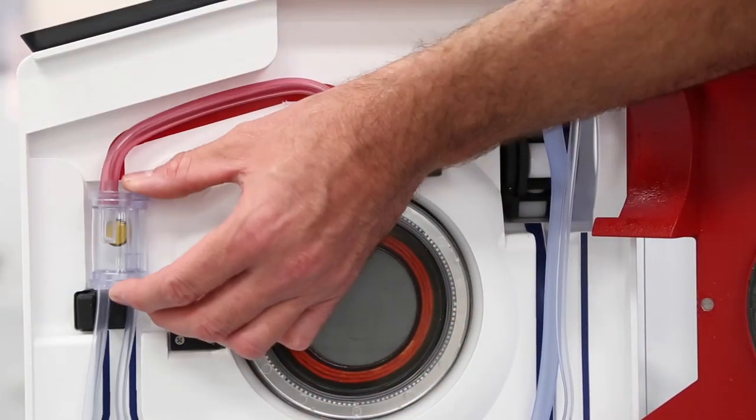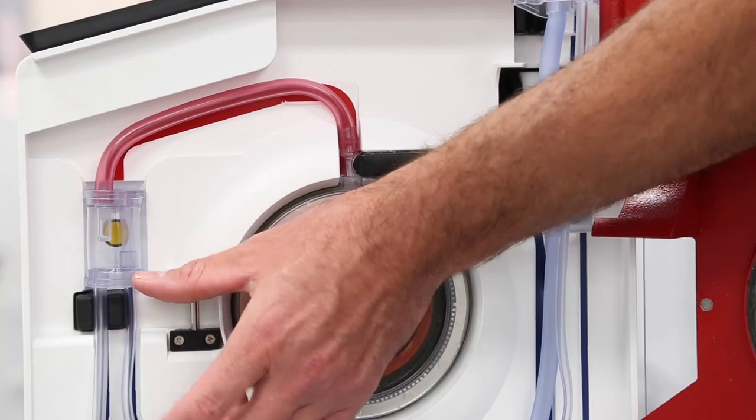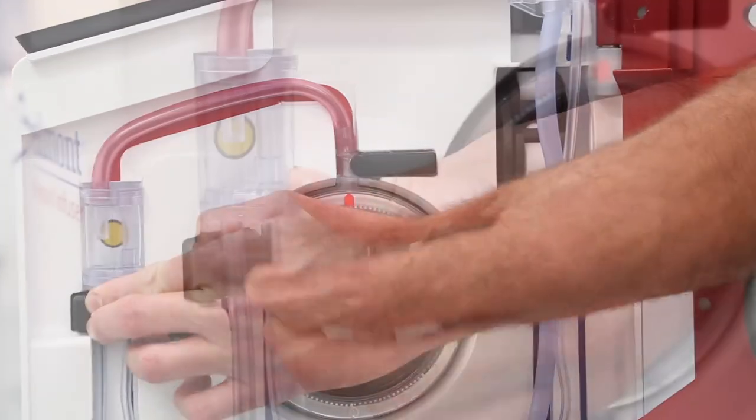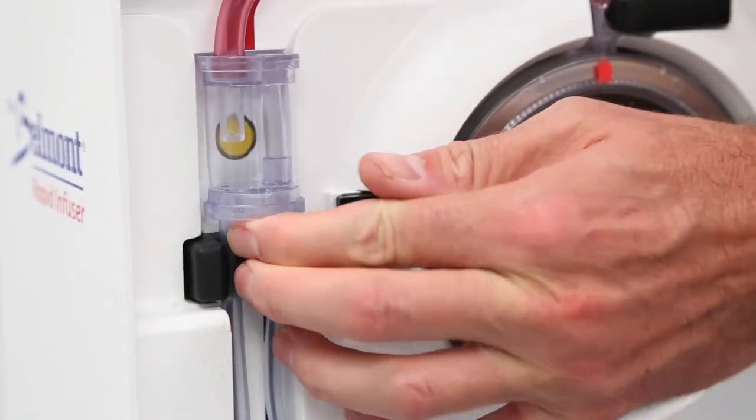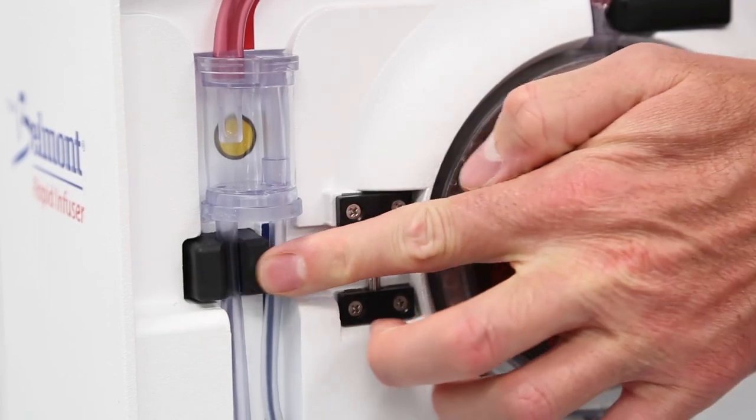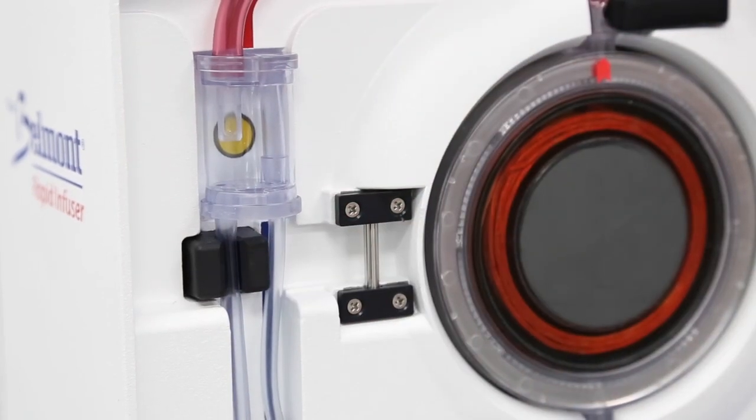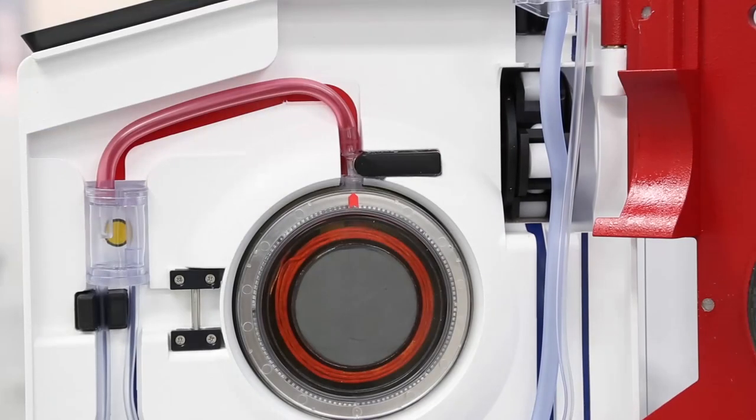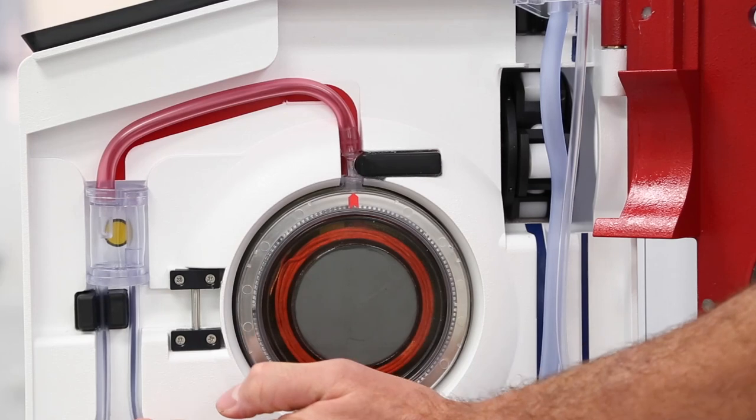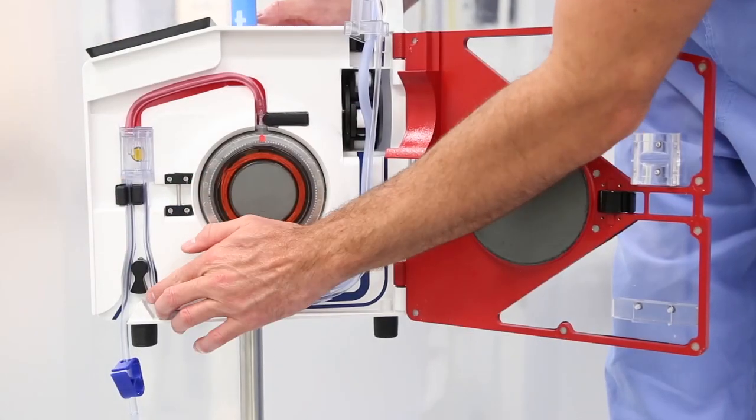Align the red tubing on top of the red stripe and place the pressure chamber into the pressure channel. Press the infuse line into the secondary air detector to the left of the patient safety valve wand. Note, the infuse line should be at or below flush within the air detector. Place the thinner recirculation line to the right of the air detector and to the right of the valve wand.